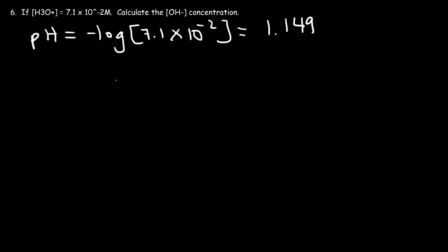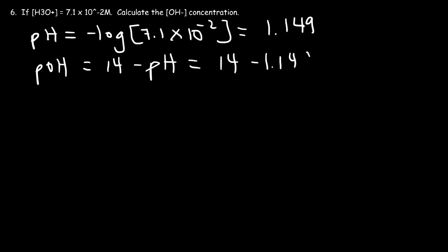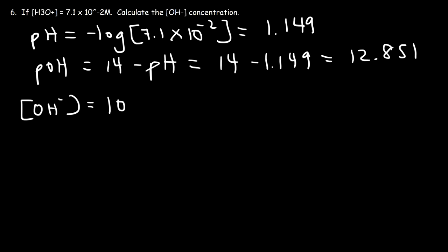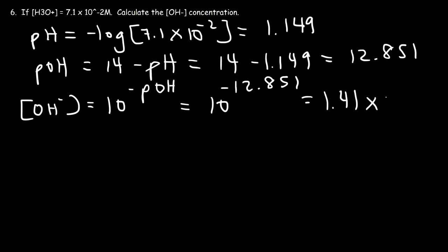Now I'll calculate the pOH, which is 14 minus the pH. So 14 minus 1.149 is 12.851. Once I have the pOH, I can easily calculate the hydroxide concentration: it's 10 raised to the negative pOH, which is 10 raised to the negative 12.851, giving 1.41 times 10 to the minus 13.